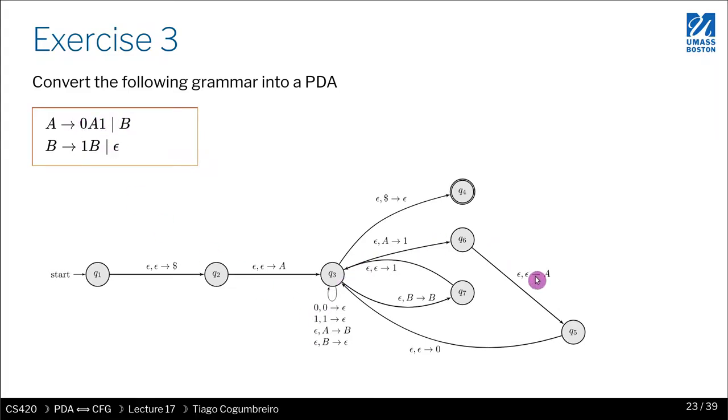So 0A1 is this long one, and then from A to B, A to B is going to be this self loop here, A to B.